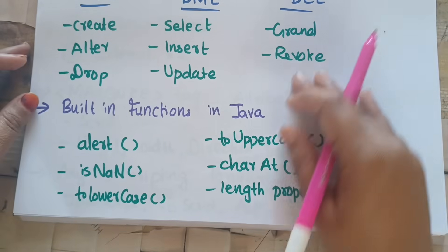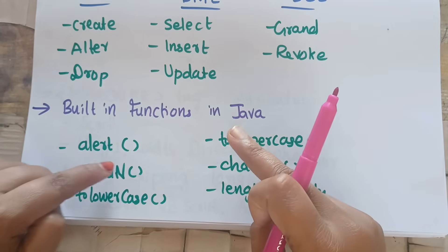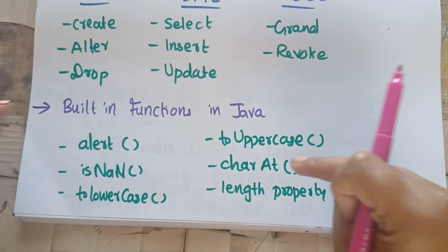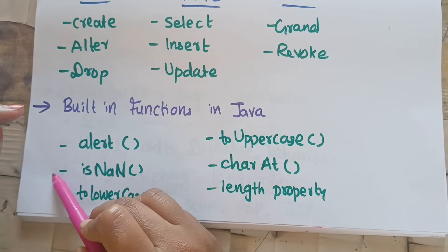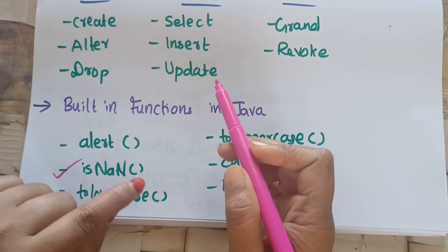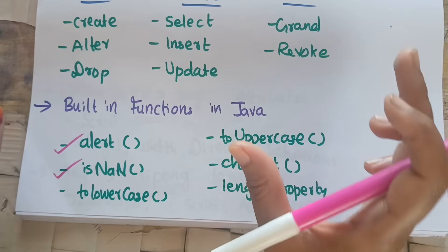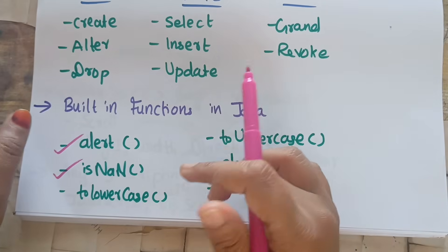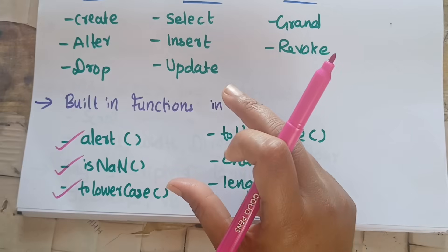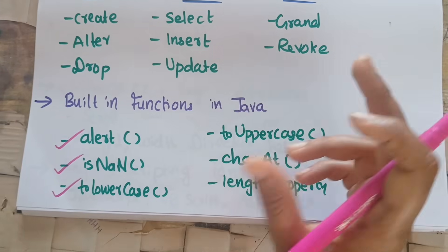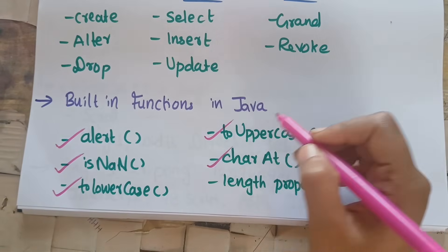Built-in functions in JavaScript include: Alert — displays a message pop-up; isNaN — checks if a value is not a number; toLowerCase — converts a string to lowercase characters; toUpperCase — converts to uppercase; and the length property — returns the length of a string.